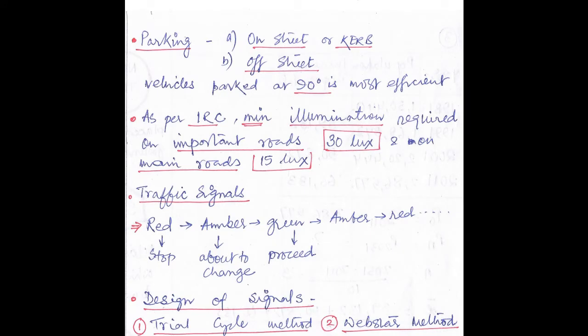Parking. Parking can be done in two ways. Number 1: On street or kerb, K-E-R-B, or off street. But vehicles parked at 90 degrees is the most efficient one.